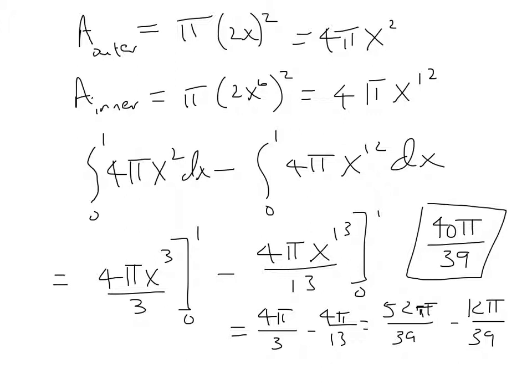Substituting, we'd have 4 pi over 3 minus 4 pi over 13. Getting a common denominator, we'd have 52 pi over 39 minus 12 pi over 39, which results in the volume of that solid: 40 pi over 39.